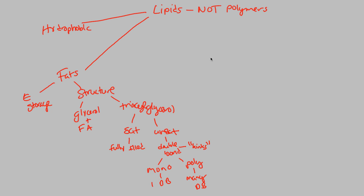Now that we understand what fats are in terms of lipids, we can look at the two other types of lipids that are important. One of them is known as a phospholipid. Phospholipids are incredibly cool because they are what are known as amphipathic. Amphipathic means that they are both hydrophobic and hydrophilic — phospholipids have this ability to both love and hate water. That is built into their nature, and we'll talk about that when we look at cell membranes later on.